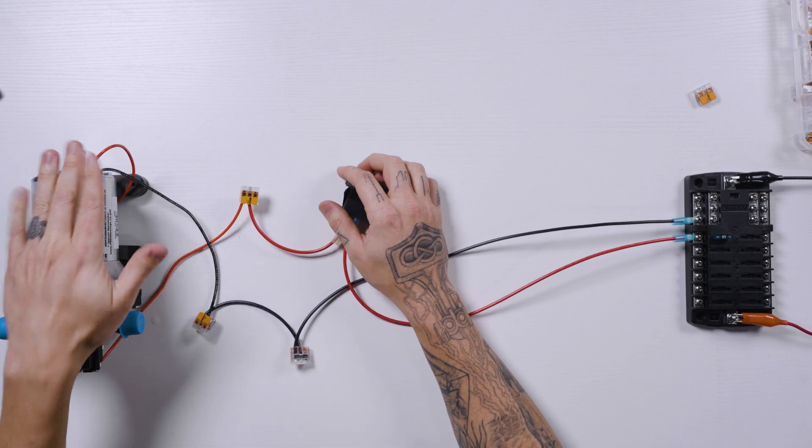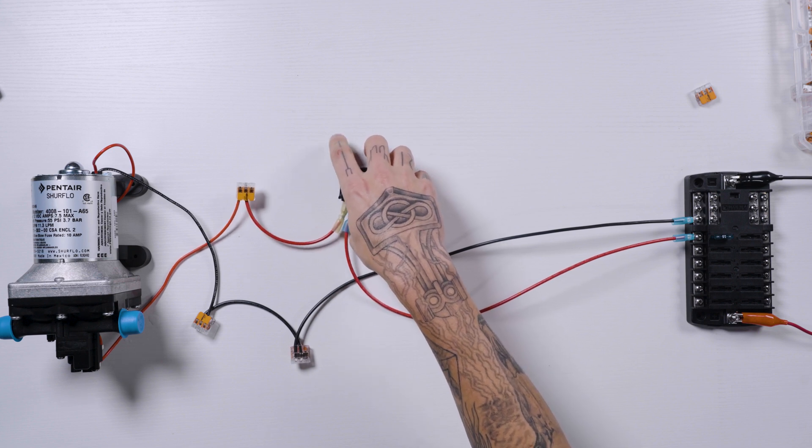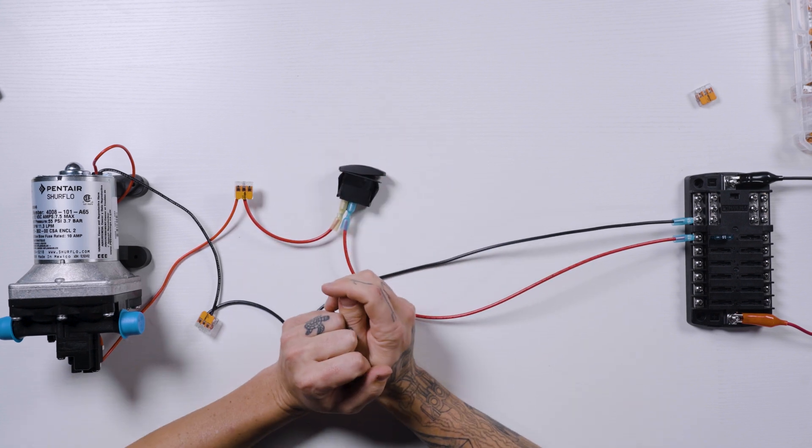It's best practice to anytime you're not actively using the sink or the shower or whatever the case is, go ahead and turn this off just to prevent any kind of accidents. So that's pretty much all there is to wiring a water pump. It's a pretty simple process. In the next video, I'm going to show you how to wire a refrigerator. So we'll see you over there.